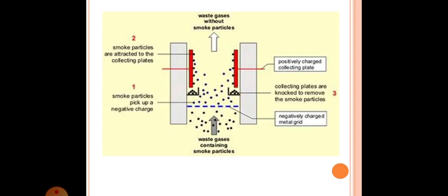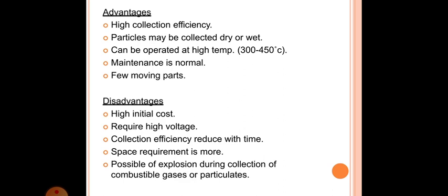Advantages are high collection efficiency, the particles may be collected dry or wet, can be operated at high temperature 300 to 450 degree Celsius, maintenance is normal, few moving parts. Disadvantages are high initial cost, require high voltage, collection efficiency reduced with time, space requirement is more, possible of explosion during collection of combustible gases or particulates.